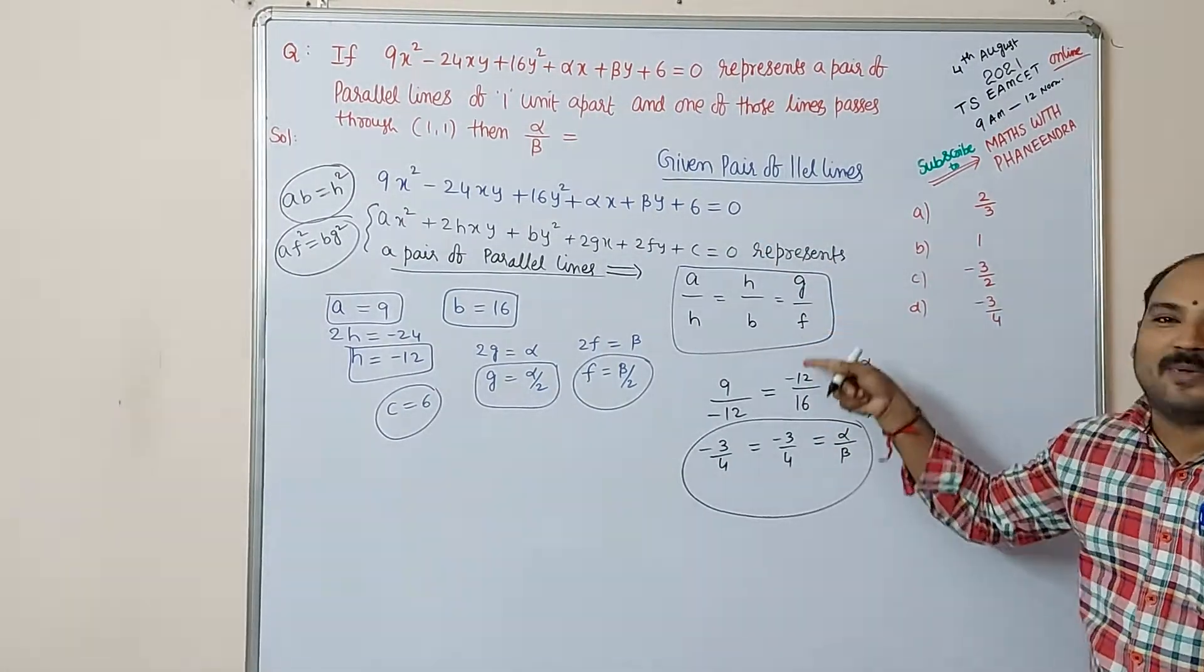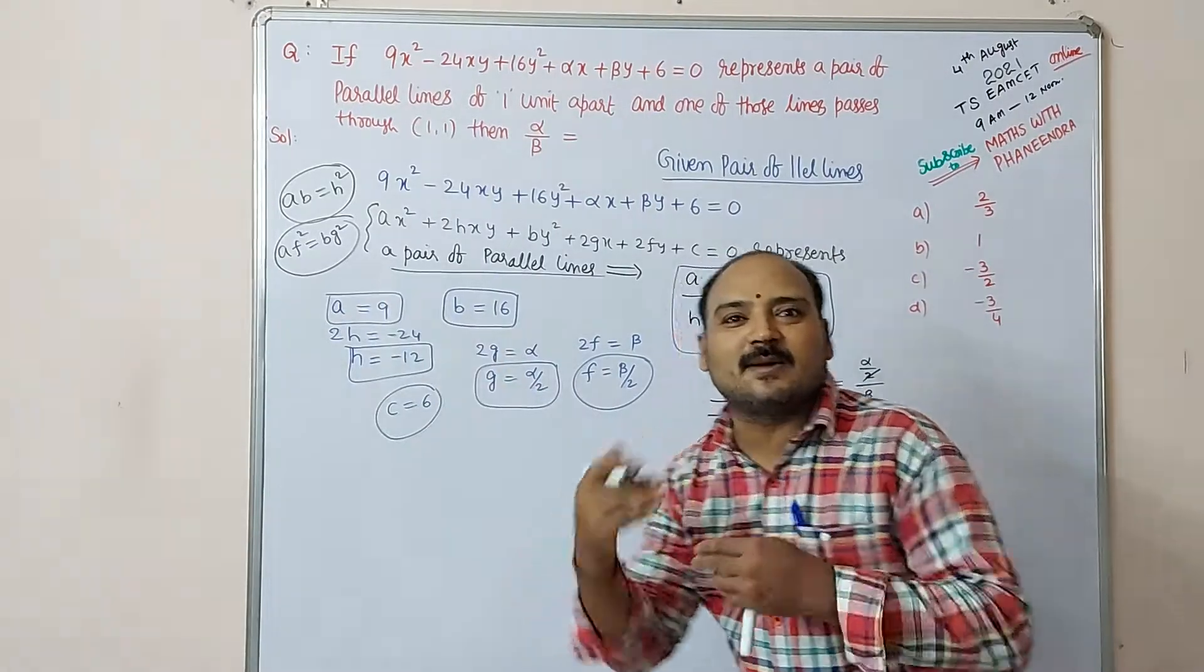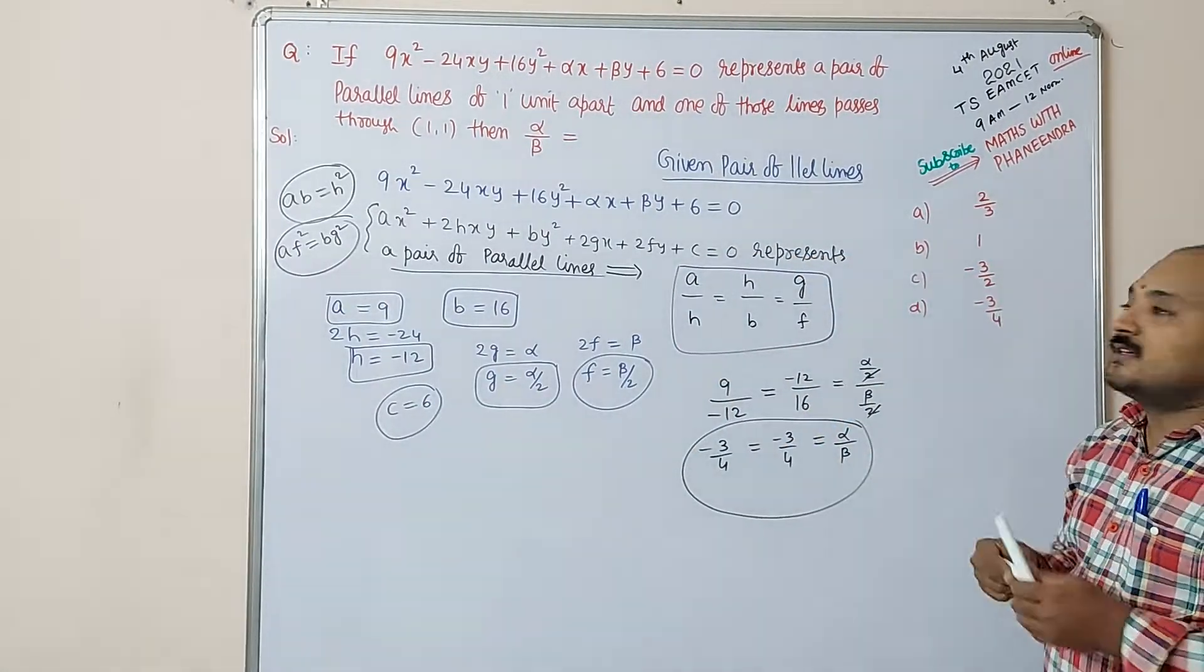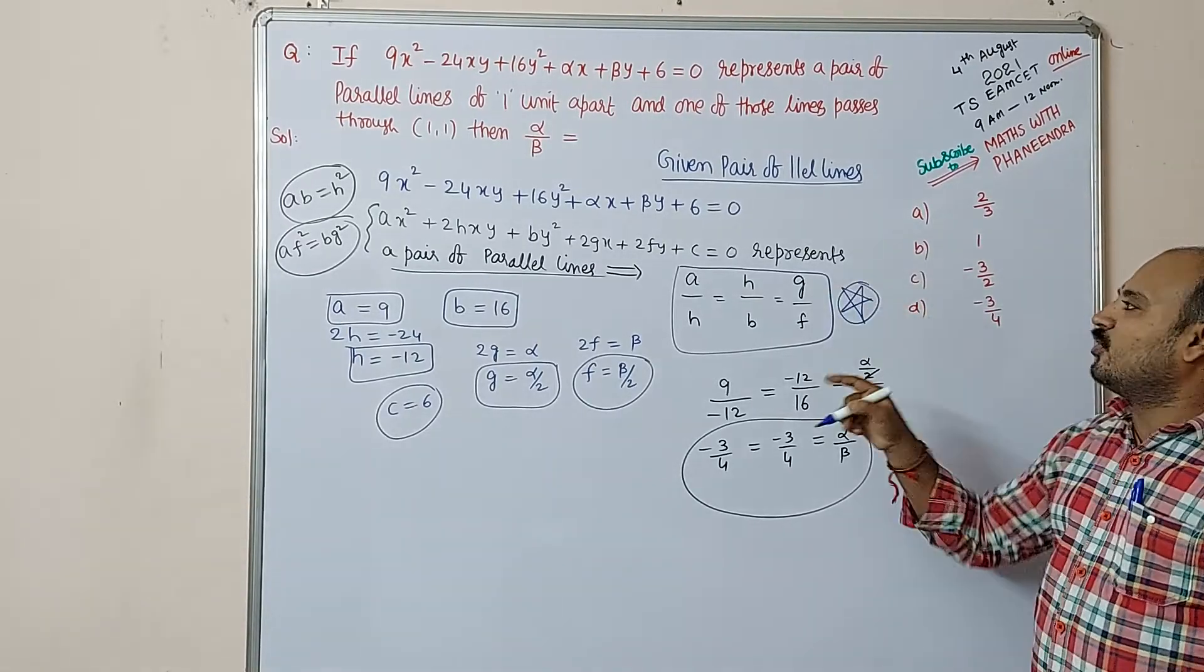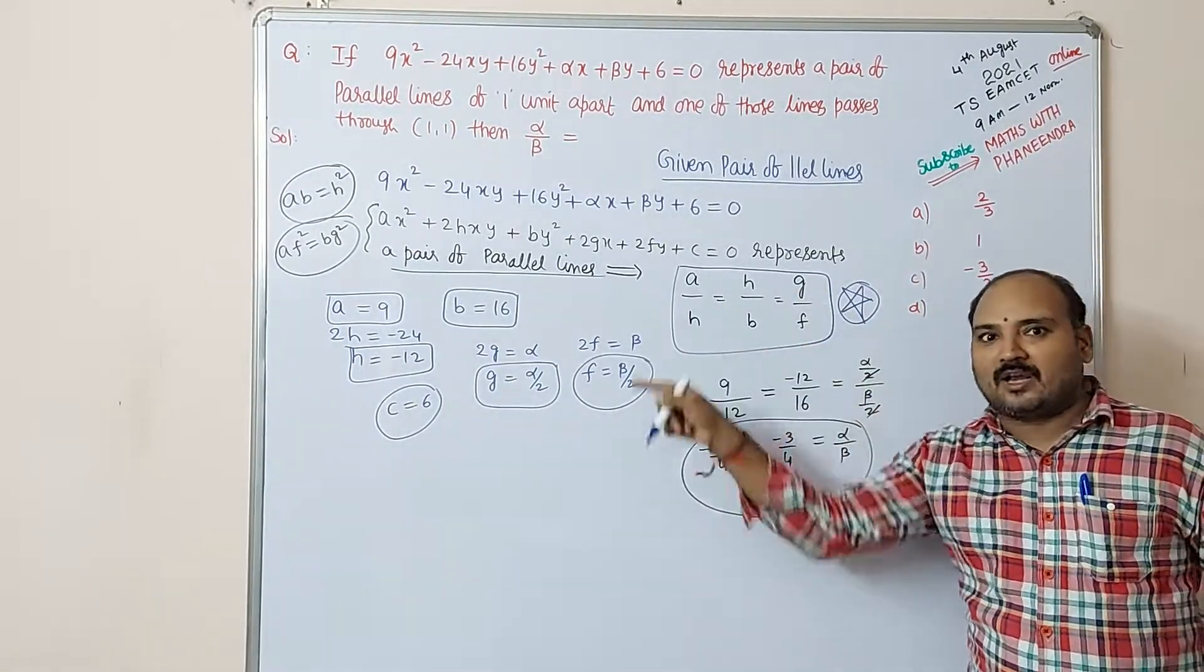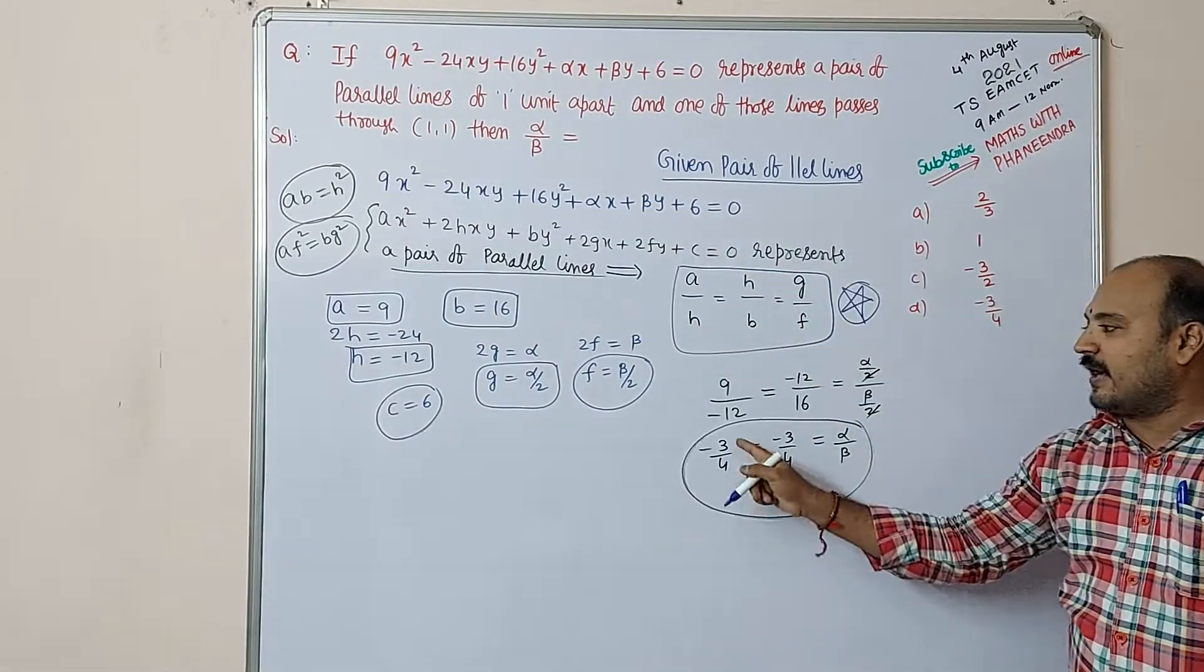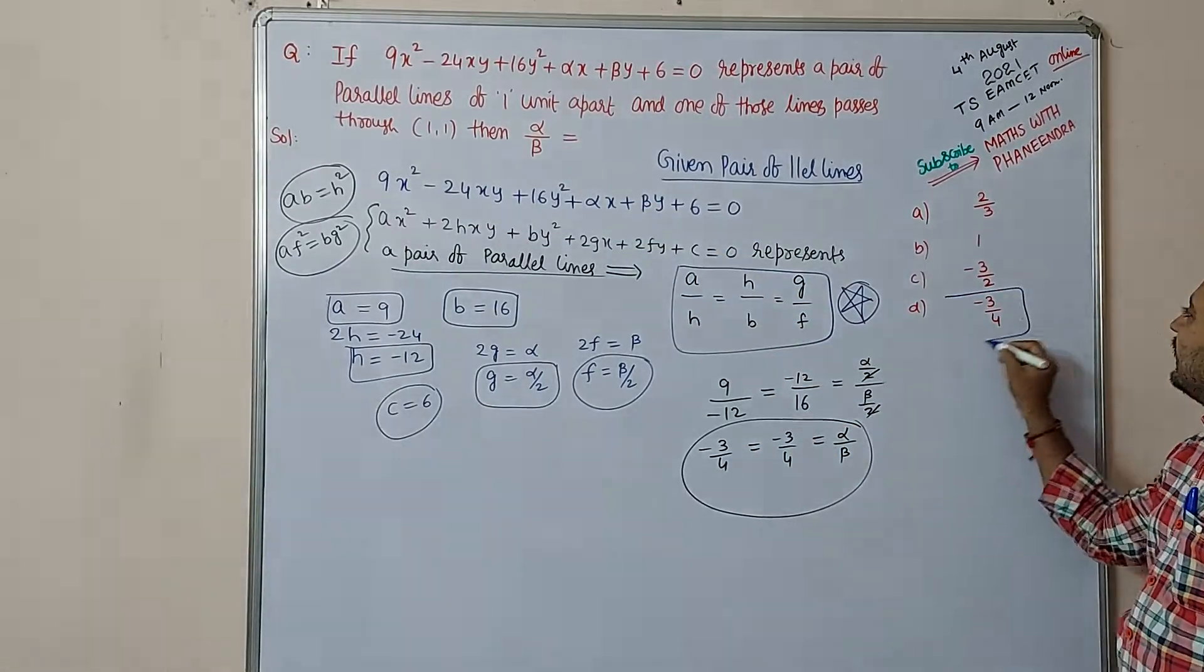If you apply this formula it will take time to get it, but if you apply this formula for the pair of parallel lines, you will get directly the answer α/β. They are asking, so the answer is -3/4 which is there in the fourth option.